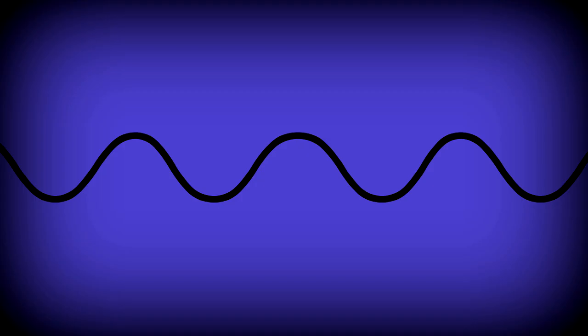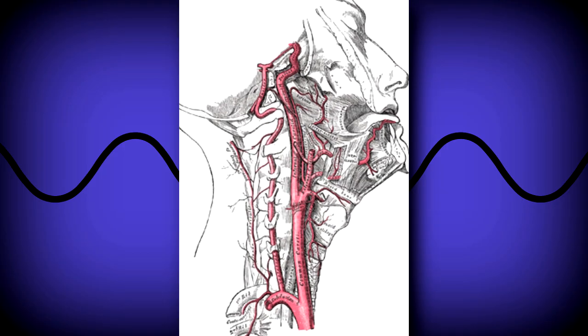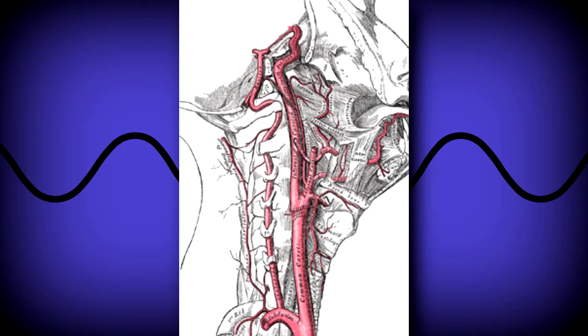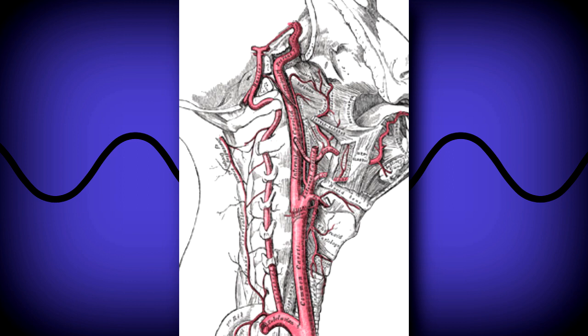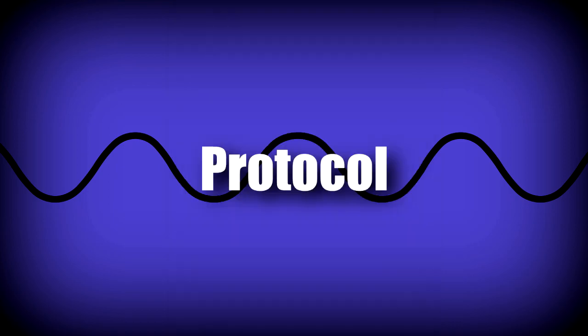According to the American Institute of Ultrasound in Medicine, you should at minimum image the common carotid artery, internal carotid artery, external carotid artery, the bulb, and vertebral arteries. Protocols can vary from place to place, but most places will follow these guidelines. Some places will add additional imaging according to their specific needs. Also, if you do find pathology, you must take further images to evaluate for it.